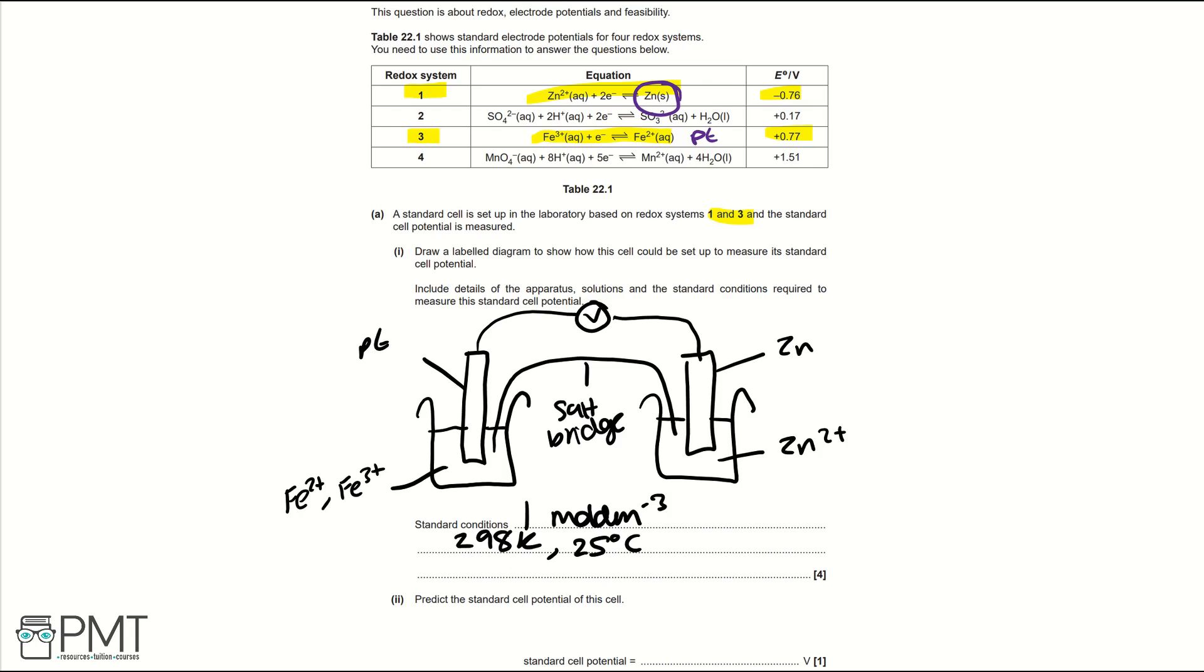Part two, predict the standard cell potential of this cell. If we look at redox systems 1 and 3, redox system 1 is going to go backwards because it's more electronegative or the electrode cell potential is more negative and redox system 3 is going to go forwards. So when working out standard cell potential of this cell we would do 0.77 minus minus 0.76 and because it's a minus and a minus that's a plus which gives us a value of 1.53 volts which we will write on our answer line. To get the mark for this part of the question you need to say 1.53 volts.